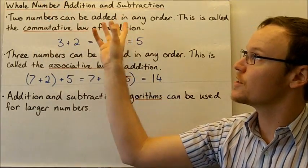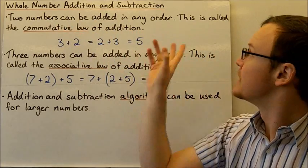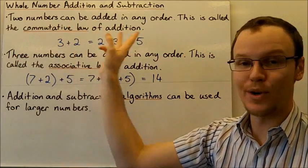Today we're going to look at whole number addition and subtraction. Two numbers can be added in any order. This is called the commutative law of addition.